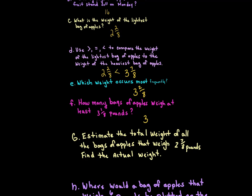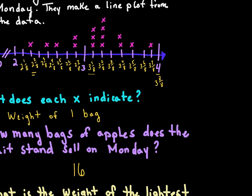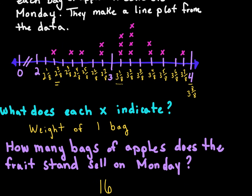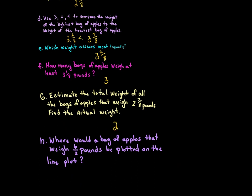Estimate the total weight of all the bags that weigh two and seven-eighths. There are two Xs at two and seven-eighths, so we calculate two and seven-eighths plus two and seven-eighths, which gives us four and fourteen-eighths. We need to simplify that — pulling out the wholes gives us five and six-eighths pounds as the total weight.